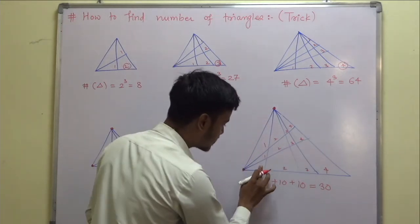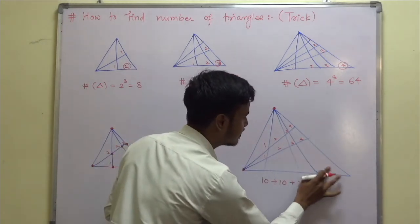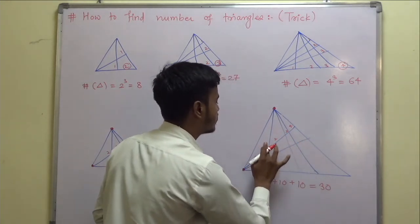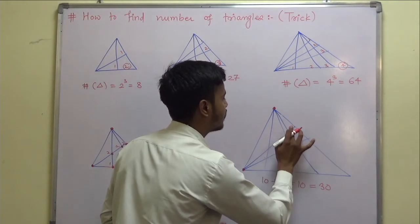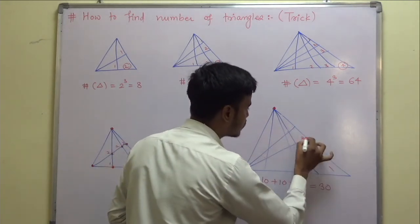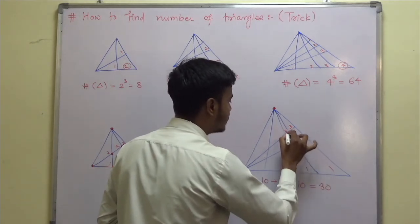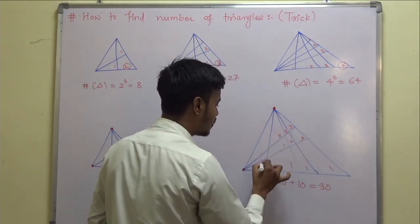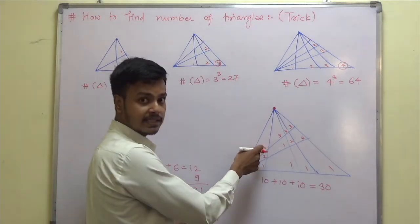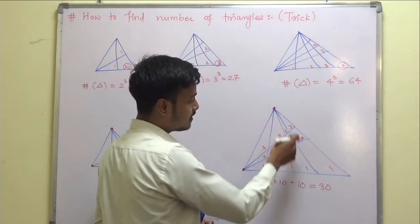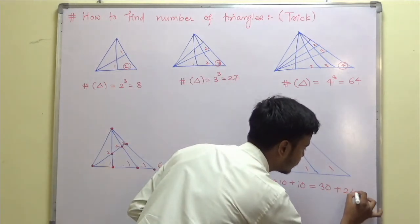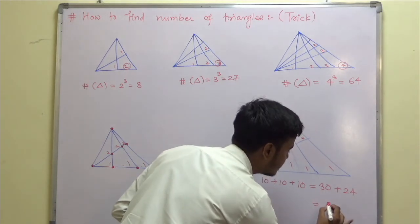Now with respect to the second reference point, counting 1, 2, 3 for each group: 1 plus 2 equals 3, then 3 more, then 3 more — so 3 plus 3 plus 3 plus 3 equals 24 from this side. So the combined total is 30 plus 24, which gives us 54 triangles — but again that is not the final answer due to double counting.